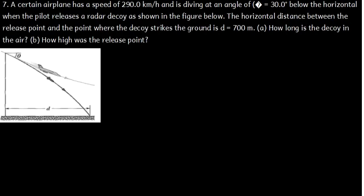Now, let's see how we can solve question seven, which is saying, a certain airplane has a speed of 290 kilometers per hour and is diving at an angle of 30 degrees below the horizontal.